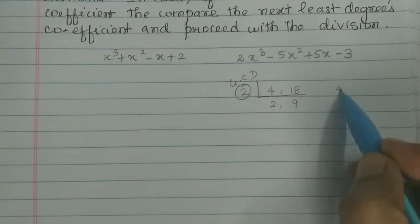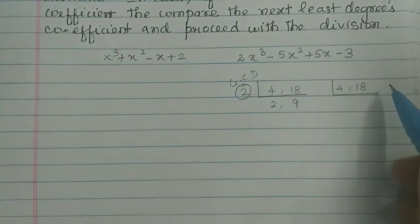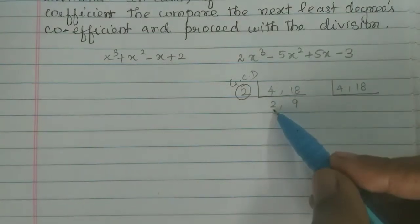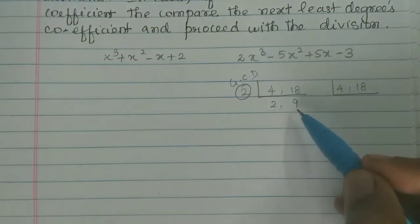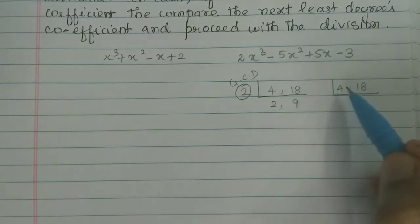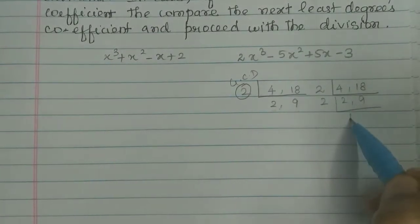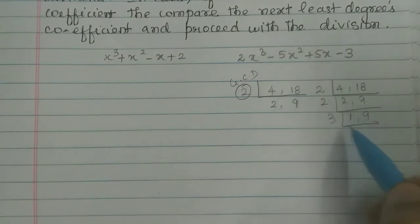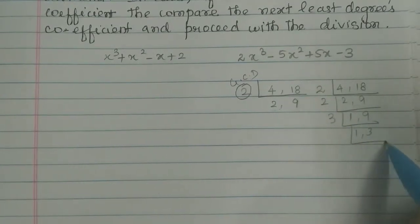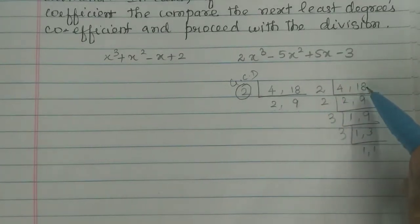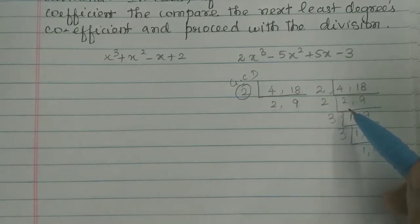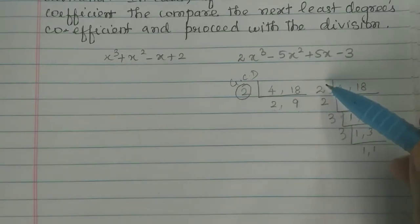So what do we call LCM? For 4 and 18, LCM is the least common multiple. We look at the multiples: 2 twos are 4, and 9 twos are 18. We divide step by step — 2, then 9, then 3 and 3, then 1 and 1 — so the least common multiple uses all prime factors. So that means the least common multiple.